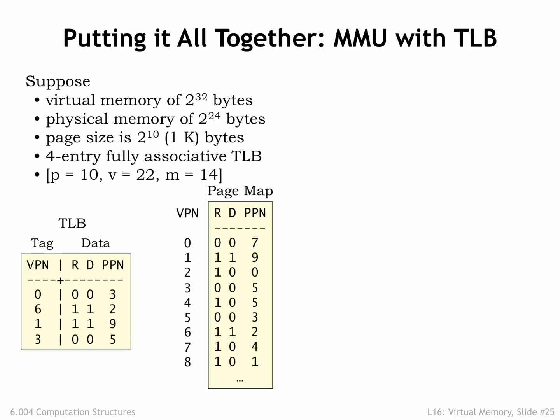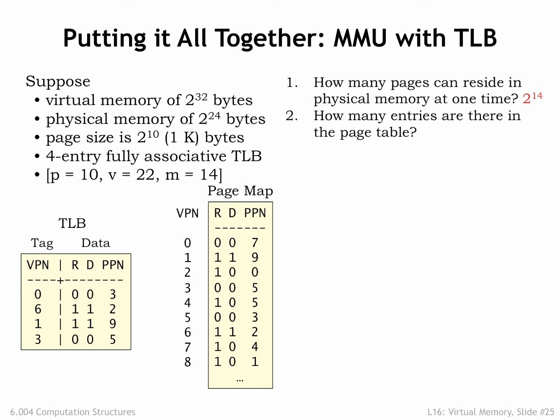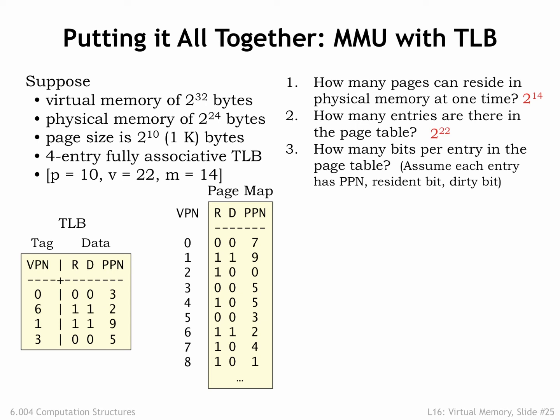Here's a final example showing all the pieces in action. In this example, P equals 10, V equals 22, and M equals 14. How many pages can reside in physical memory at one time? There are 2 to the M physical pages, so 2 to the 14th. How many entries are there in the page table? There is one entry for each virtual page, and there are 2 to the V virtual pages, so there are 2 to the 22nd entries in the page table. How many bits per entry? Assume each entry holds the PPN, the resident bit, and the dirty bit. Since the PPN is M bits, there are M plus 2 bits in each entry, so 16 bits.